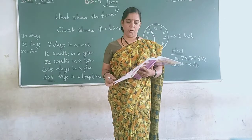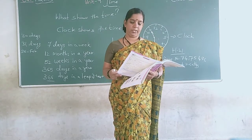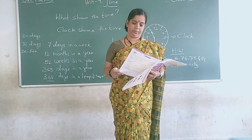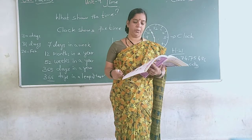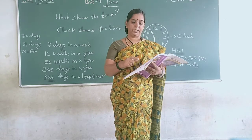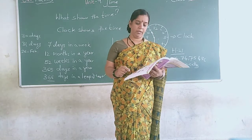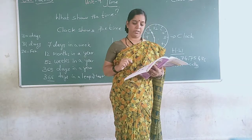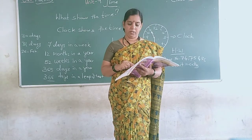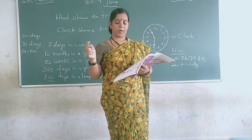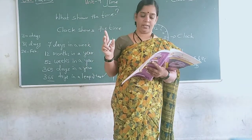Riva wants to stitch a dress for her daughter. She takes measurements, seals the dress, cuts the cloth, and buys the cloth. You have to sequence these steps: first you buy the cloth, second you take the measurement, third you cut the cloth according to the measurement, then you stitch the dress.